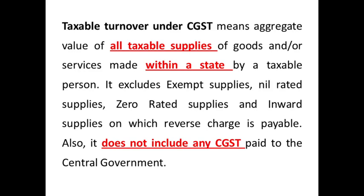When we look at the meaning, only intrastate supply will be taxed under CGST and SGST — supply of goods or services made within a state. Aggregate turnover includes zero rated supplies, exempt supplies, and non-taxable supplies. But when it comes to taxable turnover, the key word is 'taxable'.